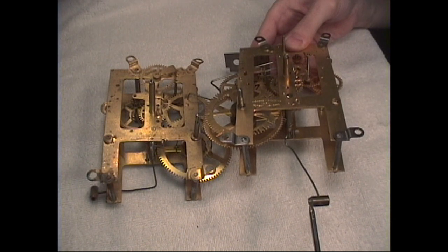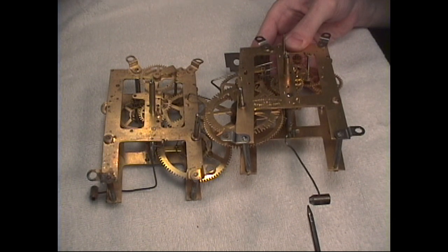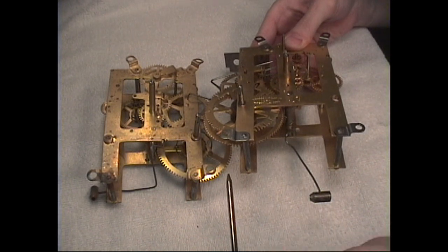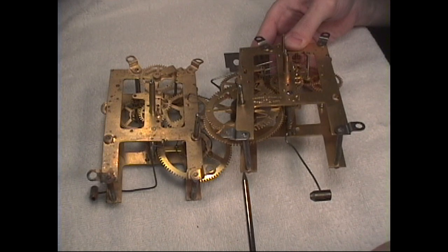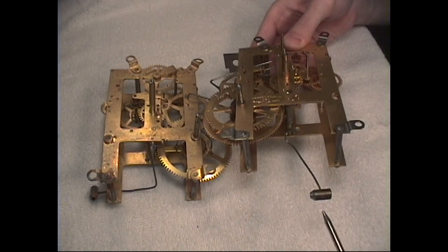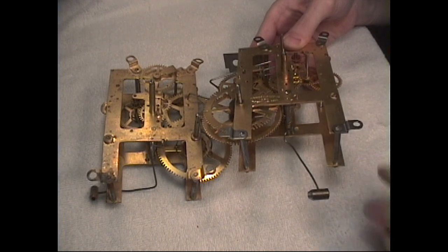So when the clock strikes and the hammer actually falls, it actually falls on a stop and momentarily flexes forward past the stop to strike and then rebounds back. And the stop can be a pin or some metal object or part of the movement plate itself.